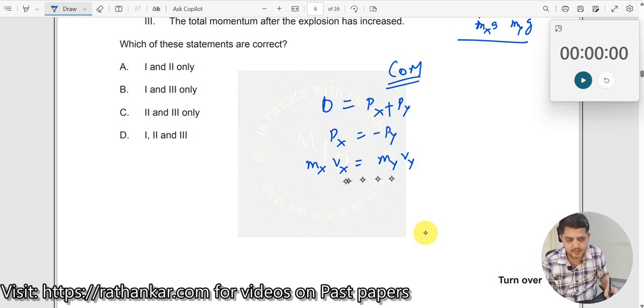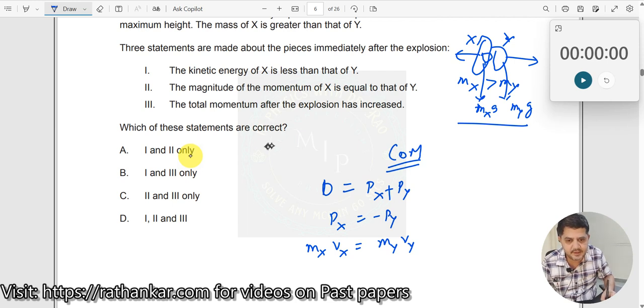So, momentum is conserved. Do we have an option for momentum is conserved? The magnitude of momentum of X is equal to the magnitude of momentum of Y. So the second statement is correct. This statement is correct.